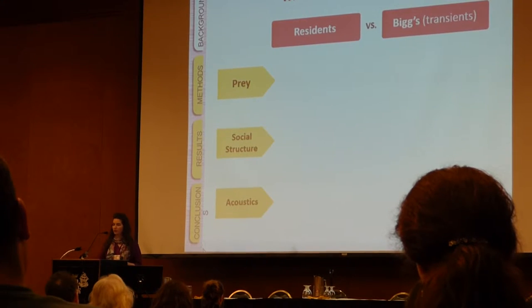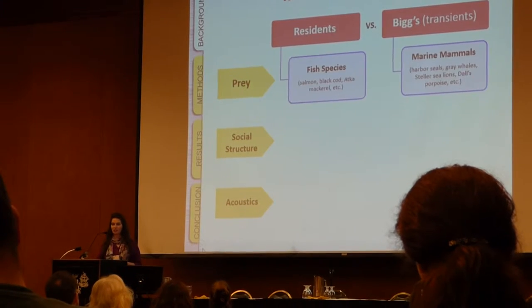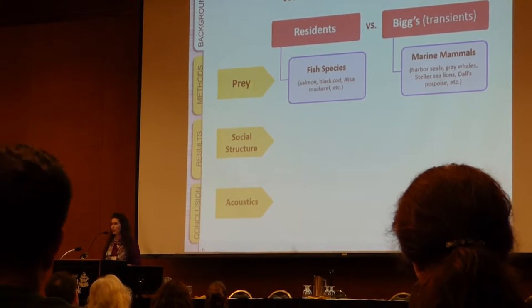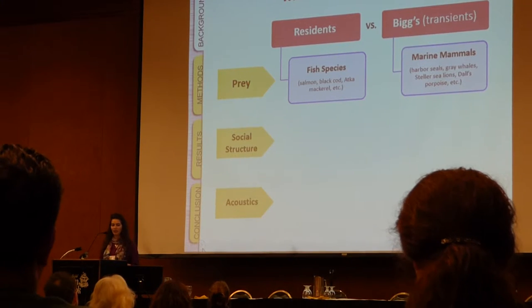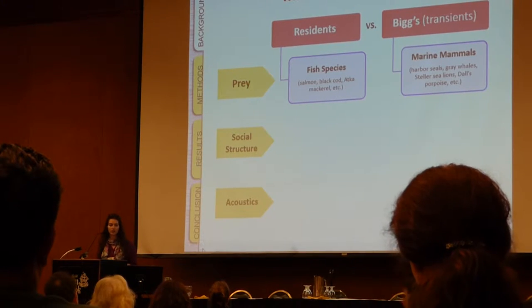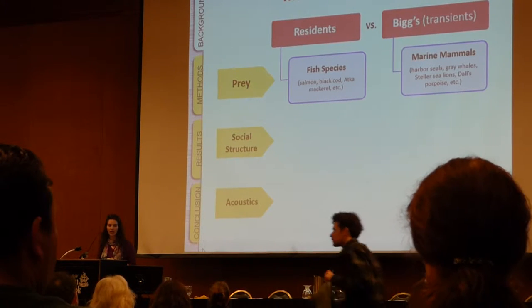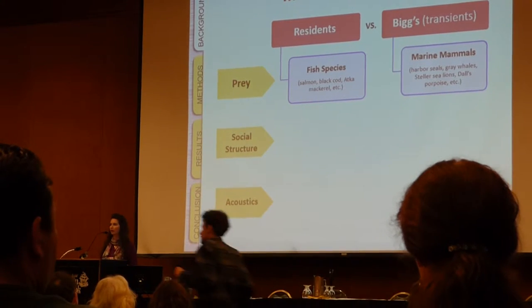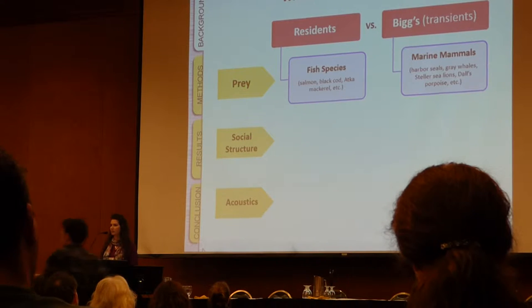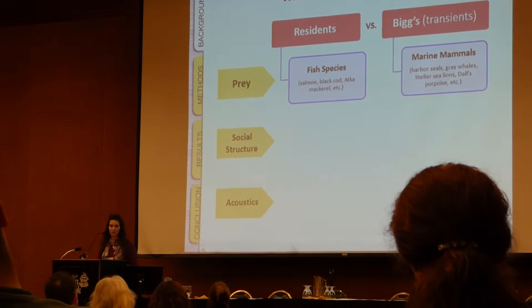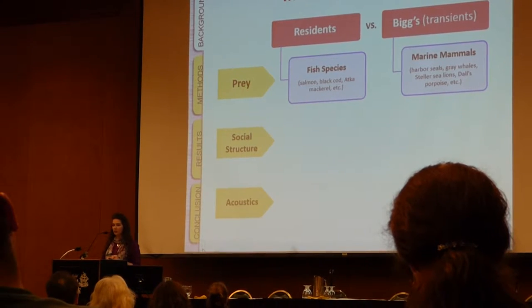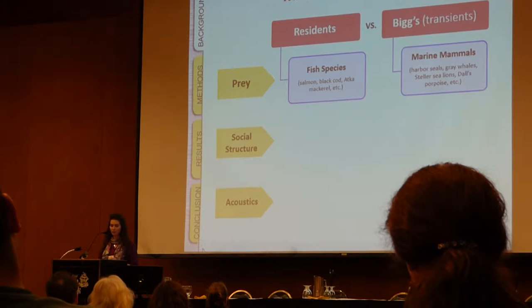The first difference is what they eat. Resident killer whales are fish specialists. Here in Alaska, they prey on salmon, black cod, sablefish, as well as a host of other species. And Biggs killer whales prey on a wide variety of marine mammals.